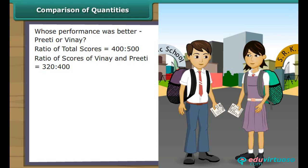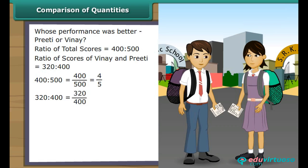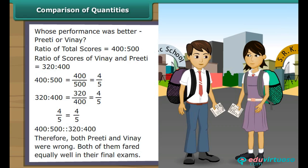Proportion: 400 is to 500 equals 400/500, which is 4/5. 320 is to 400 equals 320/400, which also equals 4/5. The two ratios are in proportion. Therefore, both Preeti and Vinay were wrong — both of them fared equally well in their final exams.